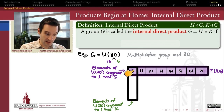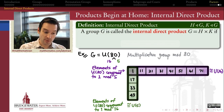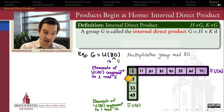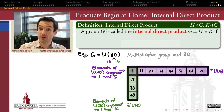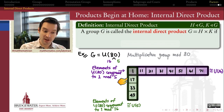Likewise, there's another subgroup consisting of the elements of U80 that are congruent to 1 mod 16. Starting at 1 and counting by 16s, taking only those relatively prime to 80, we get 17, 33, and 49. That's a group of four elements isomorphic to U5. So inside U80, we can identify a subgroup isomorphic to U16 and a subgroup isomorphic to U5. Because G is abelian, all subgroups are normal, so we've identified two normal subgroups inside G.